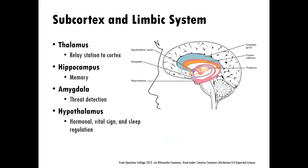Then we'll return our attention to the subcortex and limbic system and its role in trauma response, such as threat detection of the amygdala, the role of the hippocampus and memory, and also the role of the hypothalamus in sending messages, particularly to the pituitary gland.